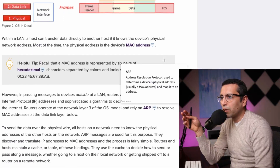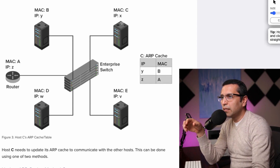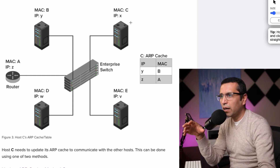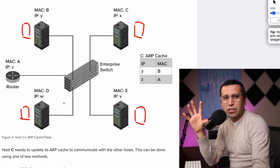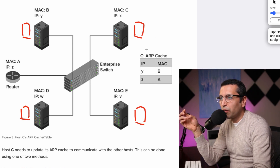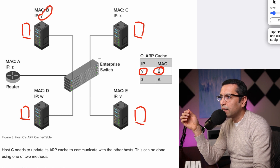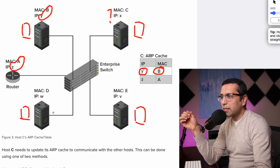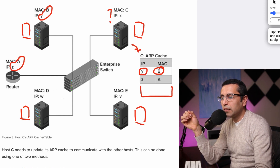ARP stands for Address Resolution Protocol. The duty of ARP is: every single device has a kind of log — a file. This computer has a file, that computer has a file. As soon as they turn on or plug into the switch, they share information with each other. So computer C has a table with IP and MAC address mappings — for example, IP Y belongs to MAC B, and so on. But if this computer wants to send information to D, and the ARP cache doesn't have that information — IP D and its MAC — how will it work?